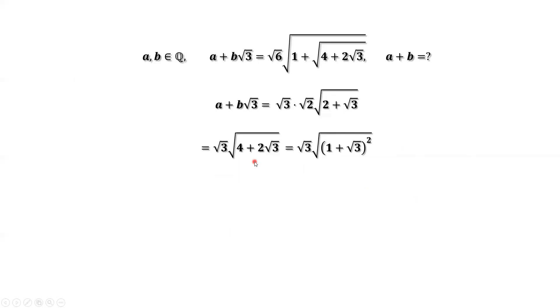Then we have √3 times √(4 + √3). The inside part is 4 plus 2√3, which is the same as this part.